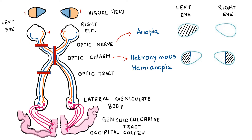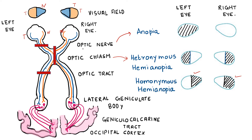Next, transecting at the level of the optic tract. Here the temporal fibers of one eye and the nasal fibers of the opposite eye are affected, so the nasal part of one eye and the temporal part of the other eye are affected. The same side of the visual field is affected in both eyes, which is why it is called homonymous hemianopia.